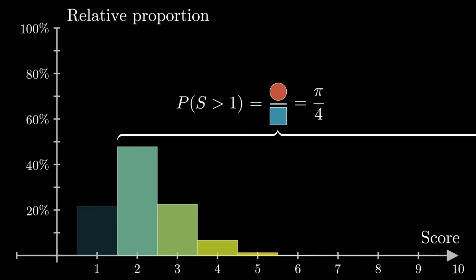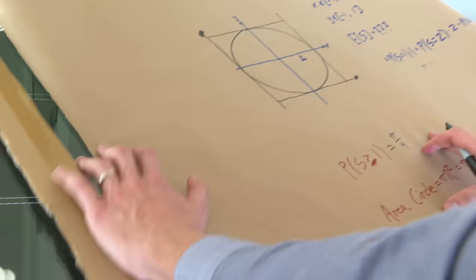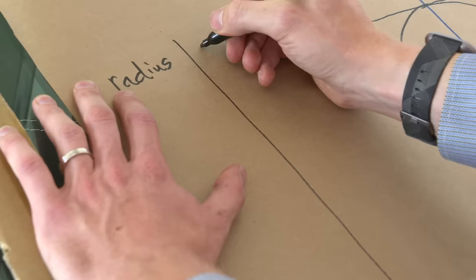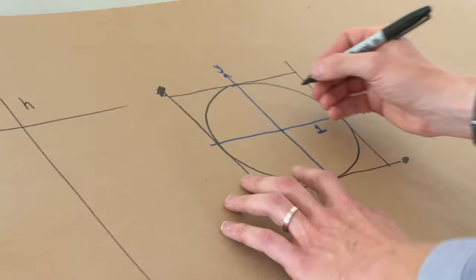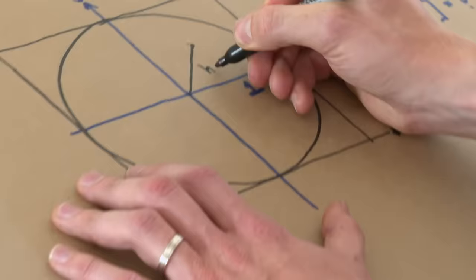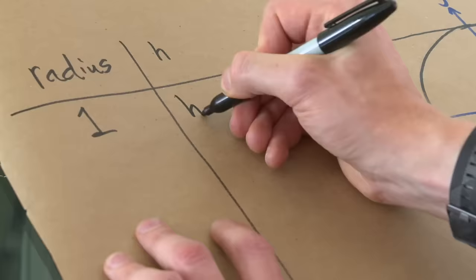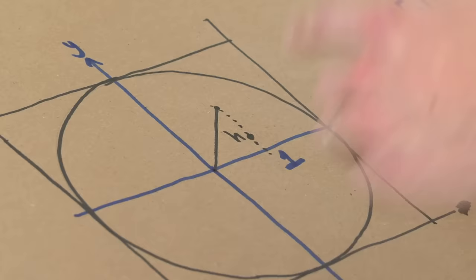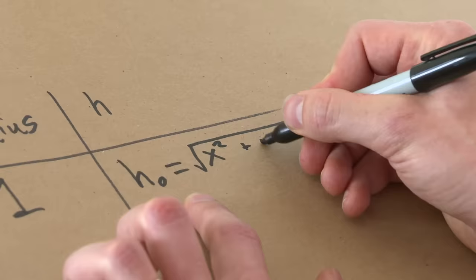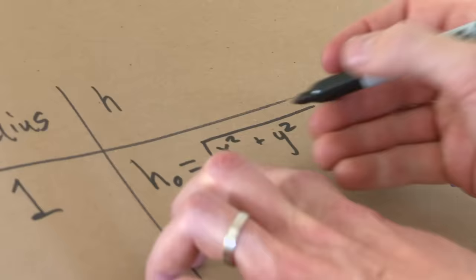Now a much harder question: given you've hit that first shot, what's the probability you hit at least two? This is where it becomes interesting, because it depends on where your first shot was. I'll keep track of the radius of each bullseye and the hit length at each point. The radius starts off as one, and that first hit is a random point — let's call it h0. By the Pythagorean theorem, h0 equals the square root of x₀² plus y₀², if those are the coordinates of the first shot.